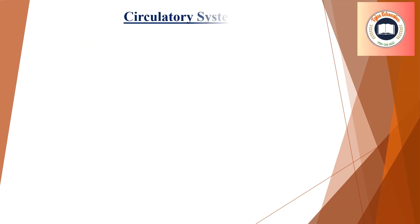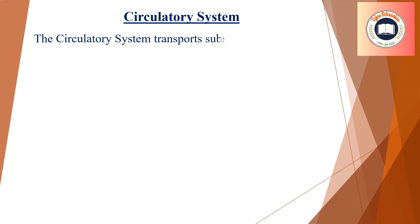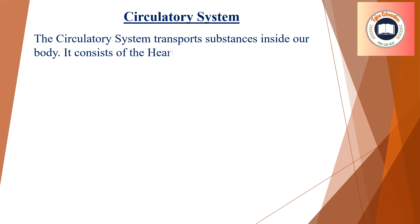The circulatory system transports substances inside our body. It consists of the heart, a network of blood vessels, and blood.